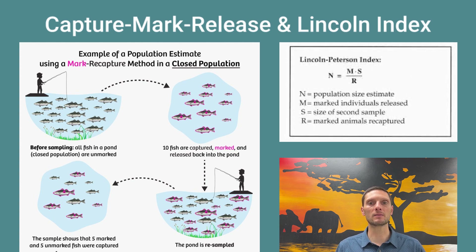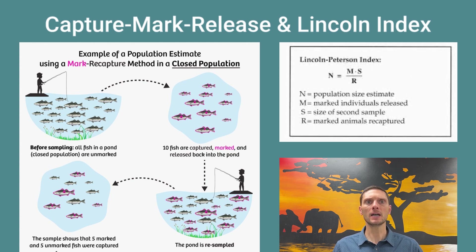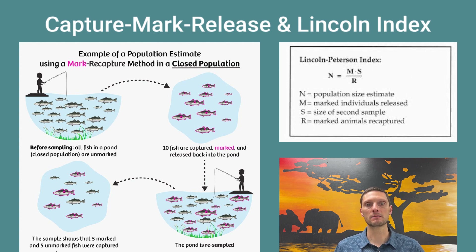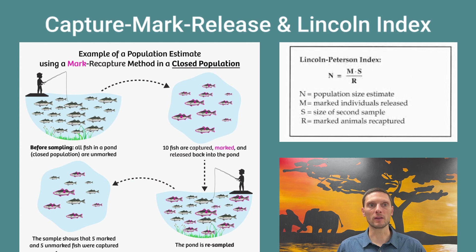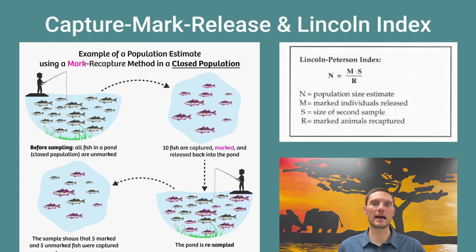For mobile organisms, the best method is the capture, mark, release, and recapture procedure, and the Lincoln Index works well for these. You capture as many individuals as possible, mark each one without making the mark visible to predators — so it doesn't decrease survival chances or impact reproduction — then release them back into the wild. Later, you recapture as many as possible, count those marked and unmarked, and use the Lincoln Index equation to estimate the overall population size.